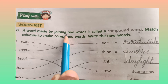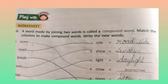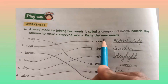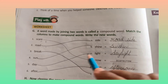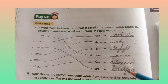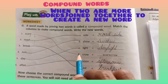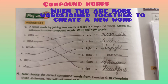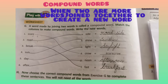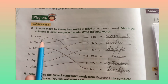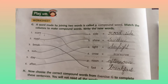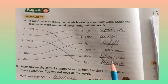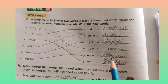A word made by joining two words is called a compound word. Match the column to make compound words and write the new words here. When two or more words are joined together to create a new word, we get a new word with a new meaning. For example: sunflower, snowball, grandmother, cupboard, toothbrush.